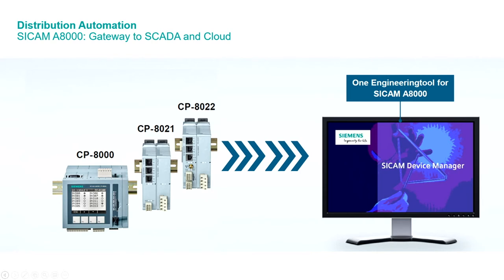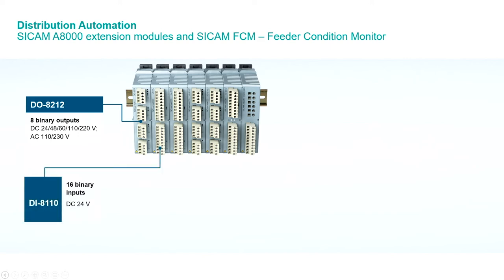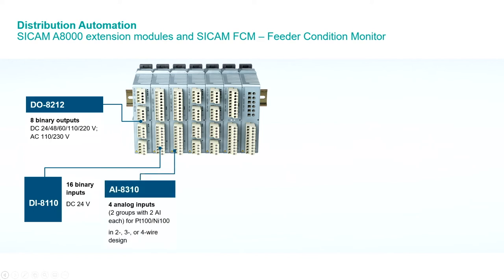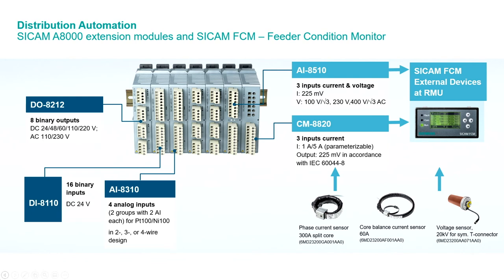The SICAM A8000 CPUs can be extended by various extension modules perfectly tailored for the secondary substation. We have different digital output cards like the AT2012, or digital input cards like the AT110, which are perfect for controlling load breakers and station signals. In addition, we have an I/O card perfectly tailored for PT100 sensors to get temperature from the station or from the transformer. We also have cards which implement SICAM FCM functionality. The SICAM FCM is the Feeder Condition Monitoring system, able to control and monitor each feeder to get fault indication, currents, voltages, and all relevant data of a feeder in a medium voltage bay.